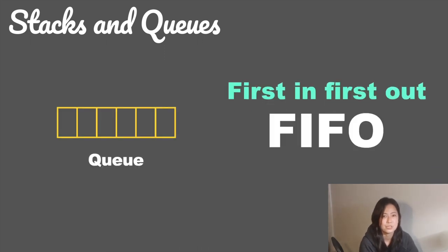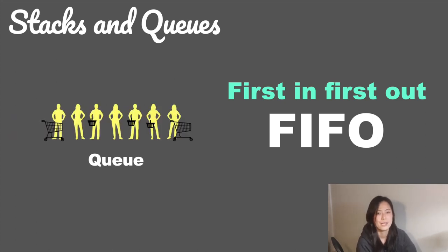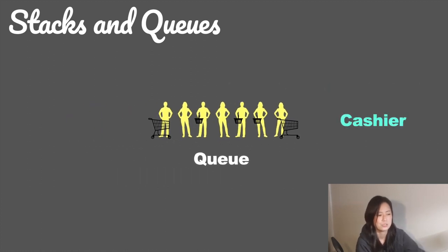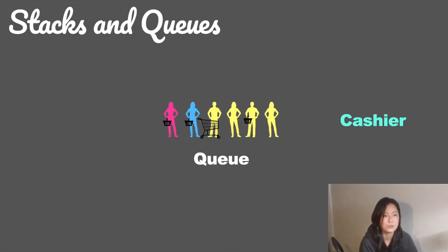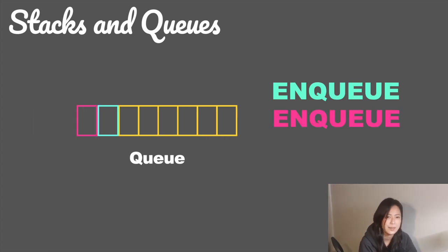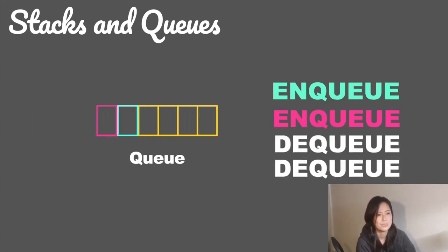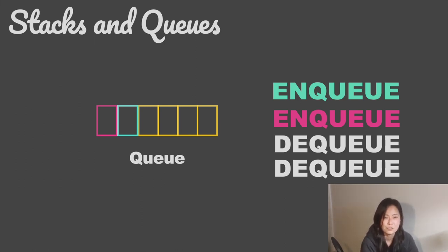For queues, it's going to be FIFO — first in first out — which works like a normal queue in real life. Just think of a line at a supermarket cashier; the first person to join the line would be the first one to be served. When we add an item into a queue, we say that we enqueued an item, and when we take it out we say we dequeued it, which means we took out the one that has been there for the longest time. That's the basic explanation of stacks and queues.